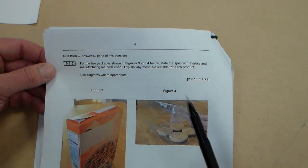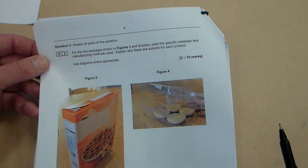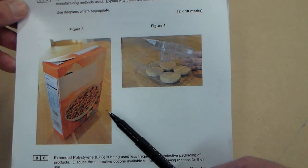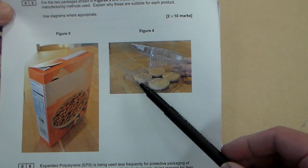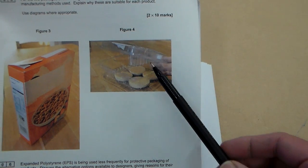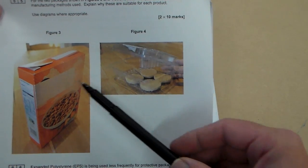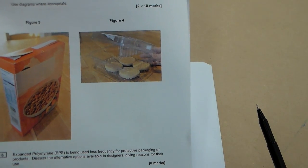As we've said before, if it says use diagrams, then a proportion of the marks are going to be allocated for diagrams. The two packaging products we've got here are a cereal box and this clear biscuit box. So we're going to look at figure 3 and figure 4. I'm going to start with figure 4 and we're going to answer this question now.